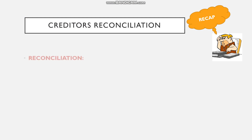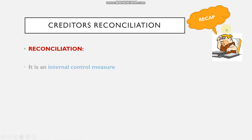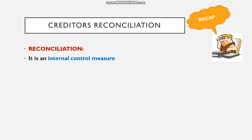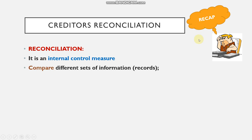Firstly, what do we mean by the term reconciliation? The first point is that it is an internal control measure. Internal control simply means that it is something we do to check whether things are being managed effectively and controlled in the manner we want. To achieve this, we need to make comparisons — we look at different sets of information or records.